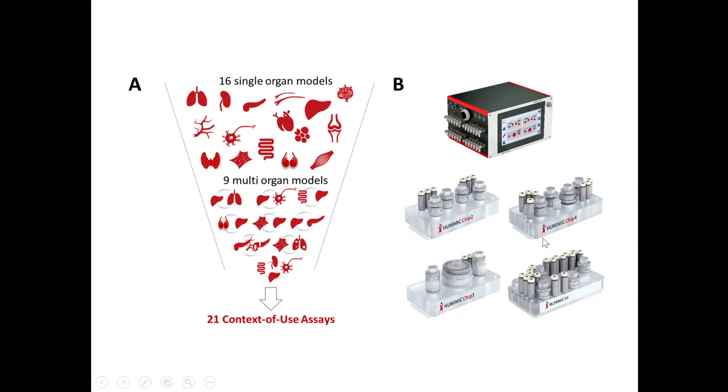Then we have the Umimic chip four and you can already guess, this can connect up to four organs and it also has a secretory circuit, a second circuit for excretory media or excretory products. And then we have the Umimic XX, which can connect up to 10 organs.